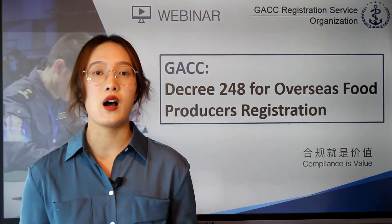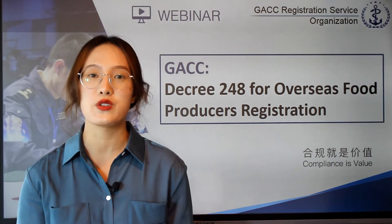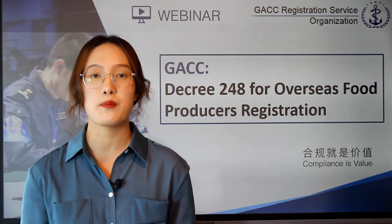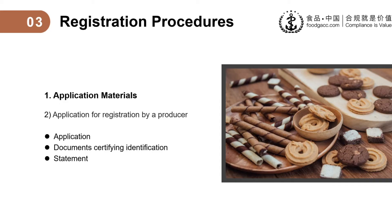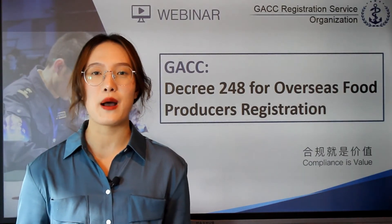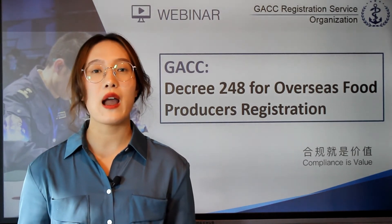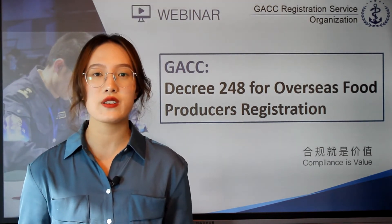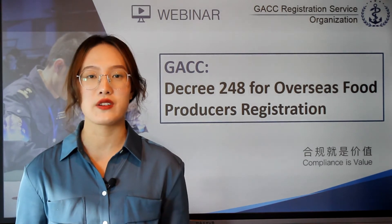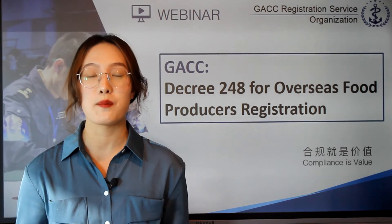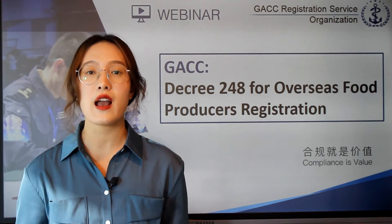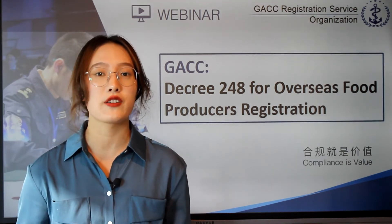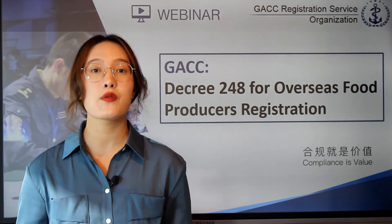For a producer which applies for registration to GACC by yourself or by an entrusted agent, you shall submit the following materials: one, your application for registration; two, some documents certifying identification; and three, a statement that you promise to conform with the new regulation 248. There are also other requirements about the application materials. The application shall include the name of the producer, country of origin, legal representative, and other required information. The application materials shall be submitted in English or Chinese. If there is any agreement between the relevant country of origin and China on the registration method and application materials, that agreement shall be followed.